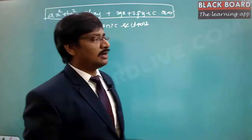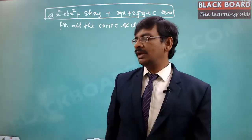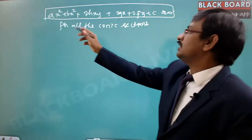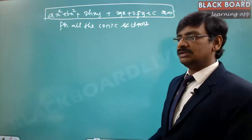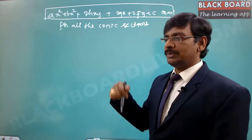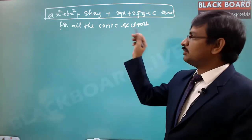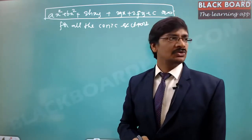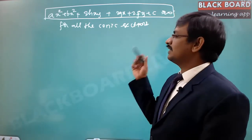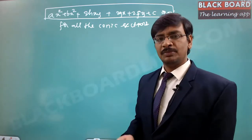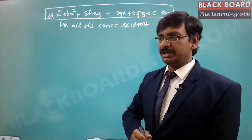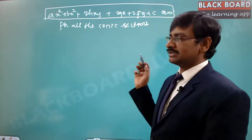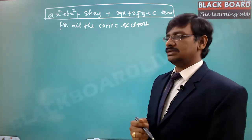Depending upon the values of A, B, C, H, G, and F, the same equation will give different shapes. These values decide which shape it has to be — it may be a parabola, an ellipse, a circle, or a hyperbola. So this is the generalized equation.